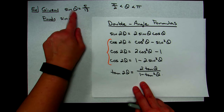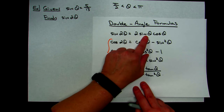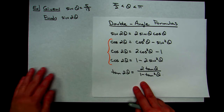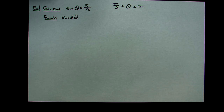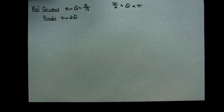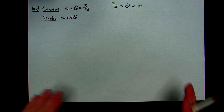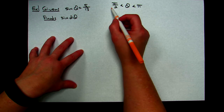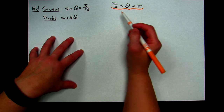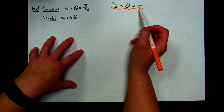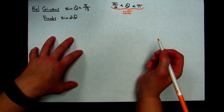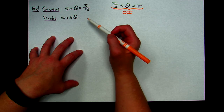They've given me the sine of θ, so I have one value to plug in. What I don't have is the cosine of θ, so I'm going to have to find that first. I'll use a reference triangle and the Pythagorean theorem to find that other value. Remembering the unit circle: π/2 < θ < π tells us that θ lies in quadrant 2. I'll need that when I make my reference triangle to find the cosine value.